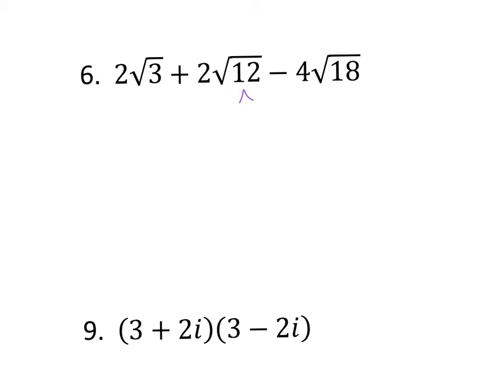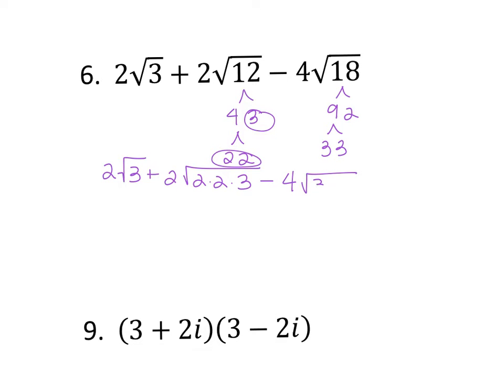So my first instinct is I'm going to break down 12. I break it down into 4 times 3, and 4 can be broken down into 2 times 2. And 18 can be broken down into 9 times 2, and then 9 can be broken down into 3 times 3. Alright, so then I'm going to have 2√3 plus 2√, well all of my primes in there, so it's going to be 2 times 2 times 3, minus 4√3 times 3 times 2.